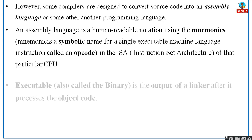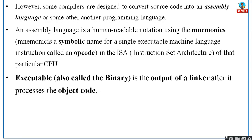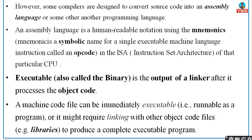The executable file, also called the binary, is the output of the linker after it processes the object code. Once the assembly language is generated, it will be converted into an .exe file — that is your binary code. A machine code file can be immediately executable, or it might require linking with other object files to produce the complete executable code. This depends on the CPU. That is why some programming languages are system-dependent and some are not — in technical terms, portable and not portable. If the same .exe file can be executed on another system, it is portable; otherwise it is not portable.